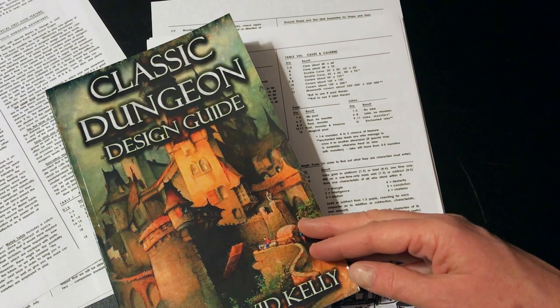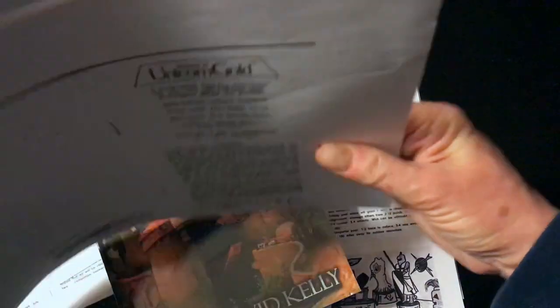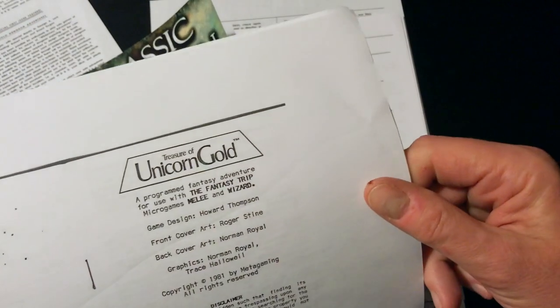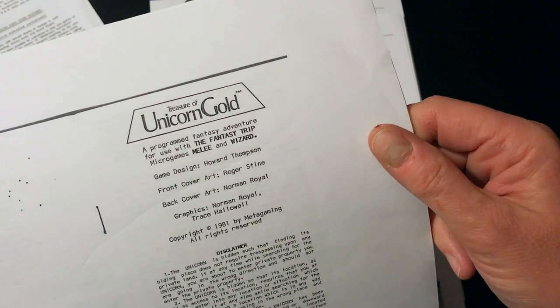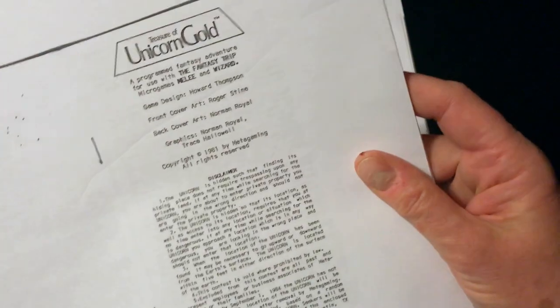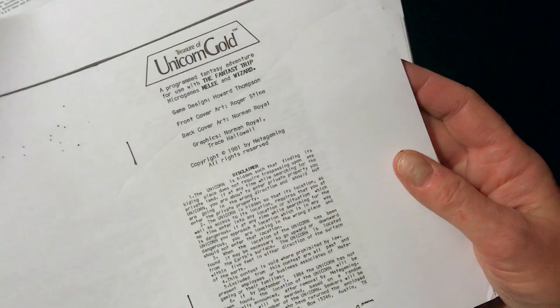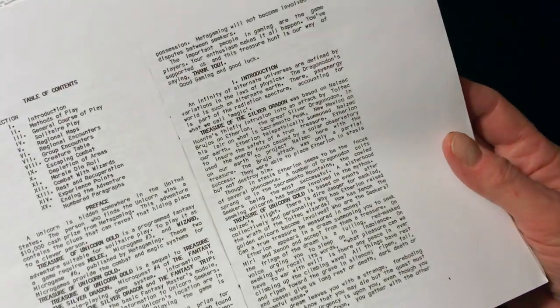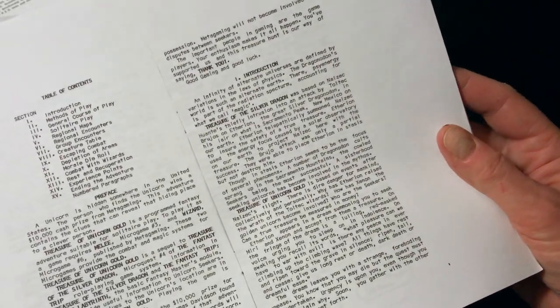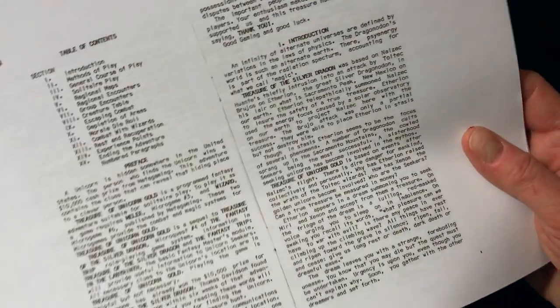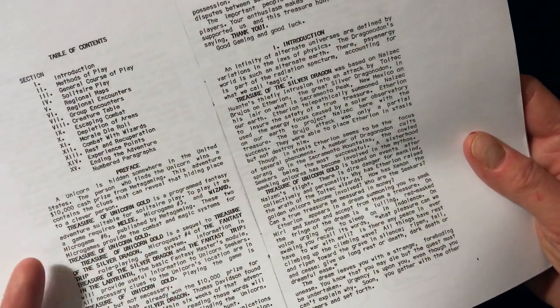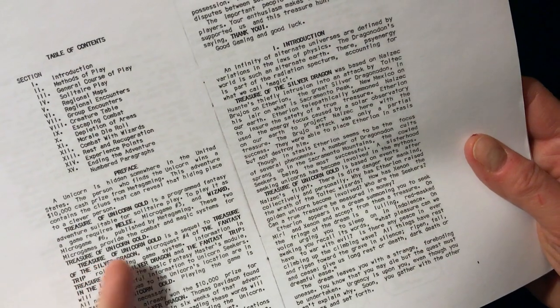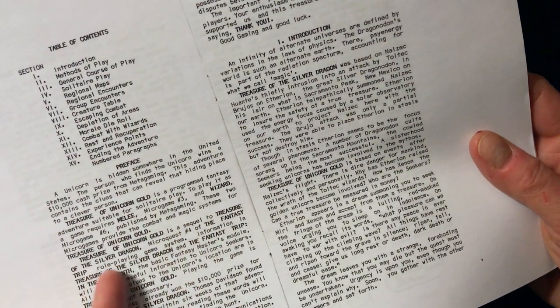This is going to be the foundation of what I'm running - this is the Treasure of Unicorn Gold. This is the programmed adventure that was from 1981. It is the follow-up to The Search for the Silver Dragon which I discussed in my earlier video on Wizard and Melee.